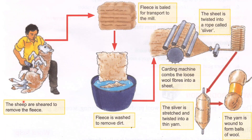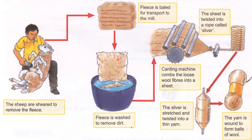Let us look at the complete process in more detail. First, the sheep are sheared to remove the fleece, along with a bit of dead skin. Then this fleece is baled and transported to mills, where there are bigger tanks and machines used for scouring — washing the fleece to remove dirt.